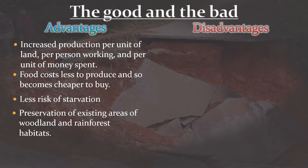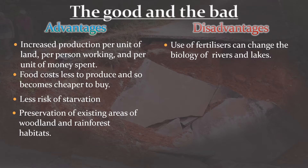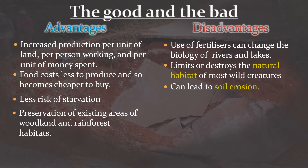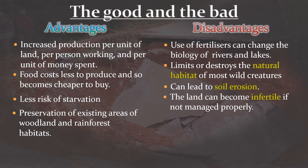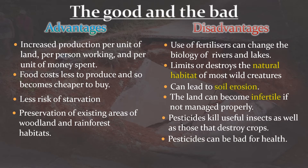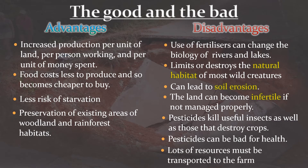Now let's look at the disadvantages. Fertilisers and other chemicals can change the biology of nearby water sources. Intensive farming also limits or destroys the natural habitat of most wild creatures. It can also lead to soil erosion, where the soil either disappears completely, or it can become infertile if the land is not managed properly. Pesticides don't just kill pests — they can also kill useful insects, and those chemicals can also be bad for human health. Finally, we need to think about the amount of energy that we need to make, transport, and use the chemicals and equipment that we are putting on all of our intensively farmed goods.